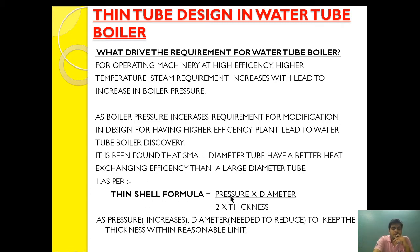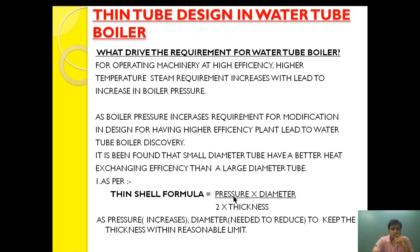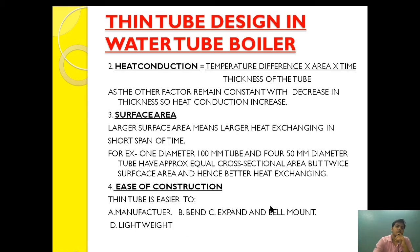According to the thin shell formula: Stress = Pressure × Diameter / (2 × Thickness). If pressure is increasing, we have to decrease the diameter to keep the thickness within a reasonable limit. If pressure increases and we also increase the diameter, we would have to increase the thickness too — which would ultimately reduce heat exchanging efficiency. So as pressure increases, we reduce the diameter so that thickness can be kept within a manageable and manufacturable limit.